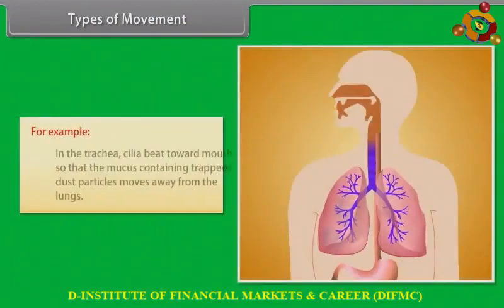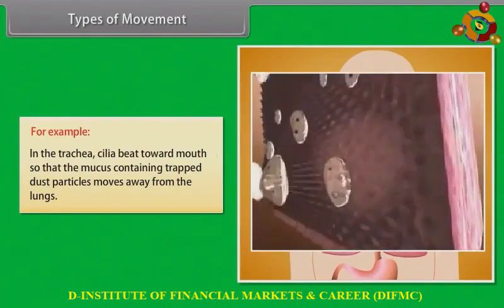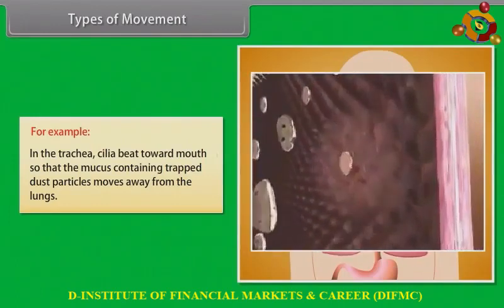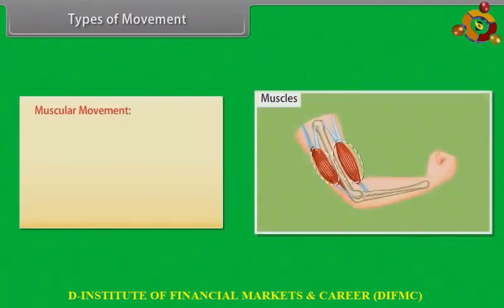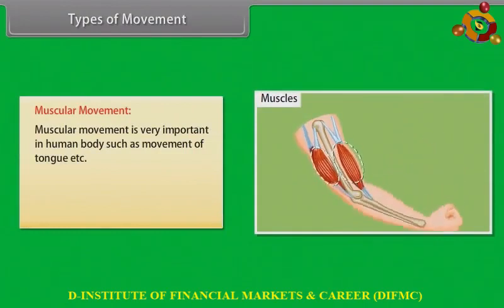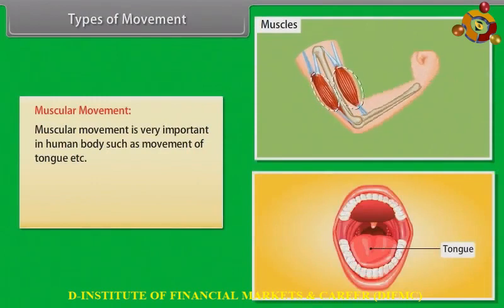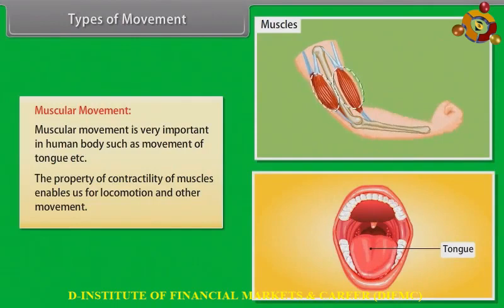For example, in the trachea, cilia beat towards the mouth so that the mucus containing trapped dust particles moves away from the lungs. Muscular movement is very important in the human body, such as movement of the tongue. The property of contractility of muscles enables us for locomotion and other movement.